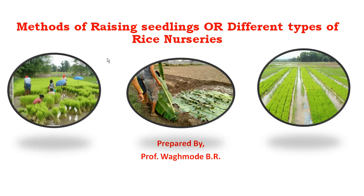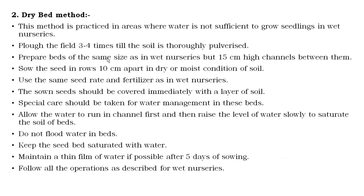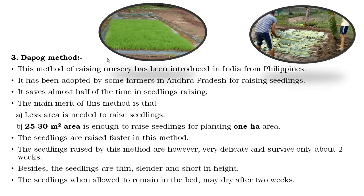Hello everyone, good afternoon. I am Professor Wagamadi Biyar. Today we will look at the topic and methods of raising seedlings, or the different types of rice nurseries. There are three main types of rice nurseries: wet bed nursery, dry bed nursery, and the Dapog.